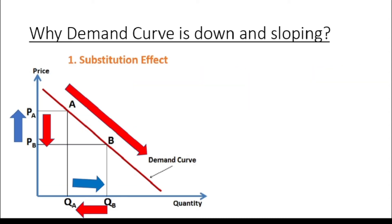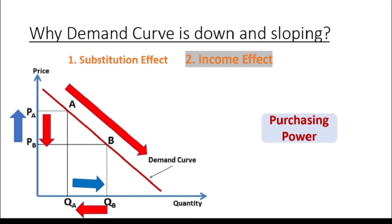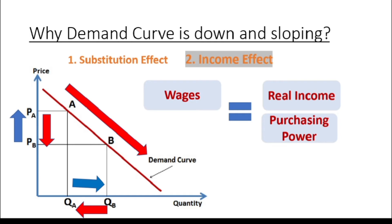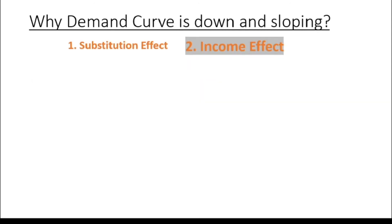The second reason why consumer behavior causes the demand curve to be downward sloping is the income effect. In microeconomics, the income effect is the change in demand for a good or service caused by a change in a consumer's purchasing power resulting from a change in real income. This change can be the result of a rise in wages, or because existing income is freed up by a decrease or increase in the price of a good that money is being spent on.